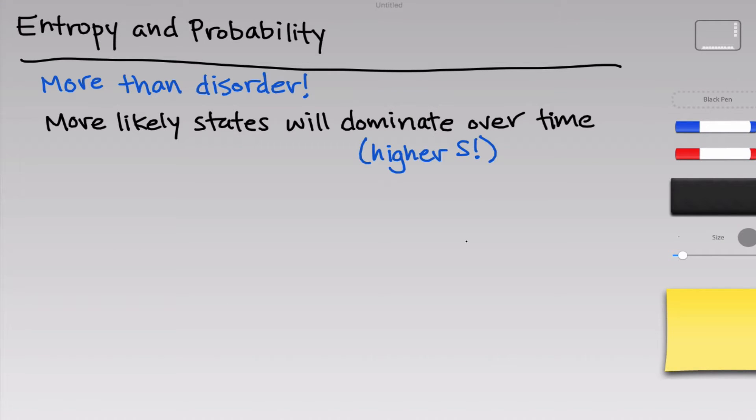Let's think just purely in probability terms first. What makes the spread out state likely is that there are many different ways to prepare it, many more than there are to prepare the concentrated state with gas particles only in one portion of the container.